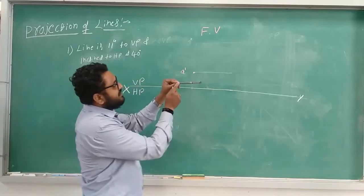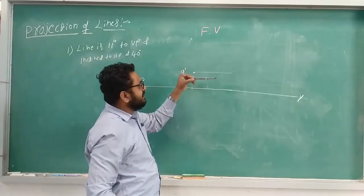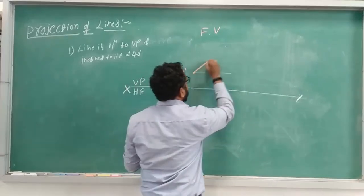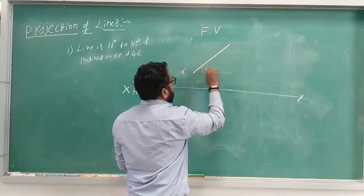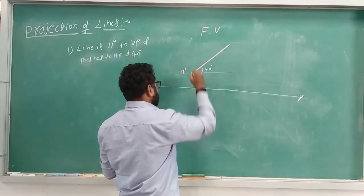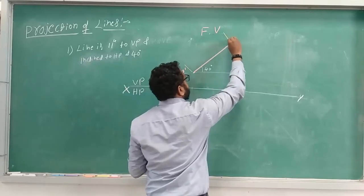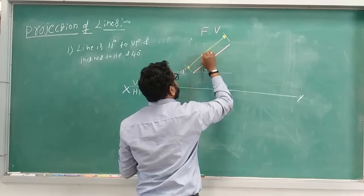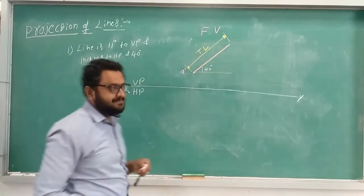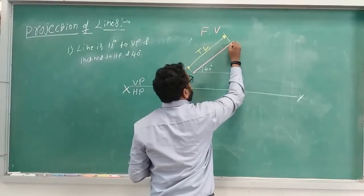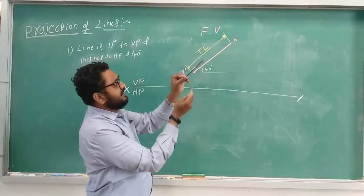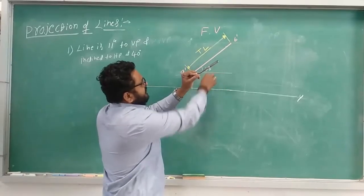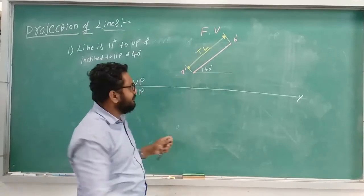Point one is fixed and the second point is rotating — it is lifting by 40 degrees. So we measure 40 degrees and draw the actual length of the line at that angle. The angle is 40 degrees. The line remains parallel to VP, so in the front view we get the true length, and the change in angle with respect to HP can be measured in VP. Based on this front view, we will now get the top view.